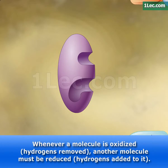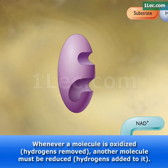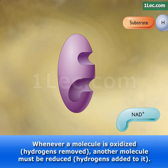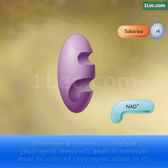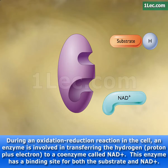Whenever a molecule is oxidized, another molecule must be reduced. During an oxidation-reduction reaction in the cell, an enzyme is involved in transferring the hydrogen to a coenzyme called NAD+. This enzyme has a binding site for both the substrate and NAD+.